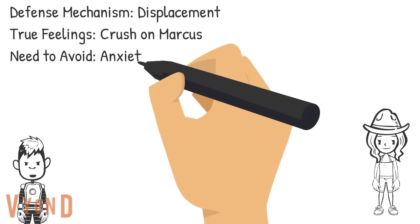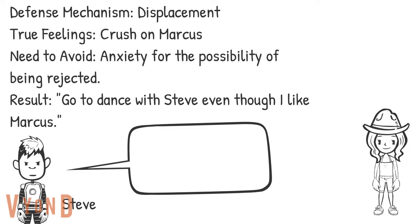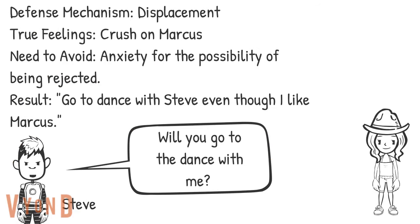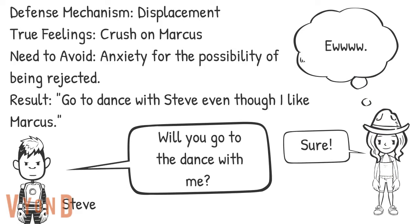Another defense mechanism is displacement, where you take your feelings towards someone and displace them towards someone or something else. So let's take Sally, who gets asked out to the dance by Steve. Sally does not have to worry about getting rejected by Steve because he asked her out. However, she acts like she has a crush on Steve, even though in reality she thinks he's gross and really still has a crush on Marcus.